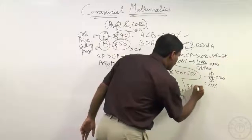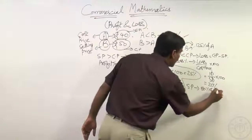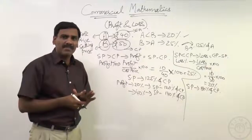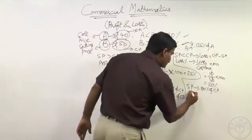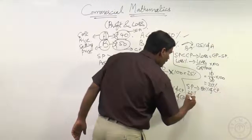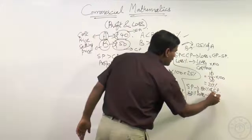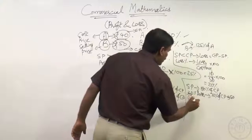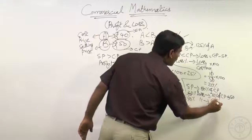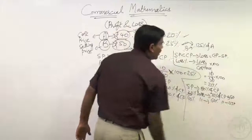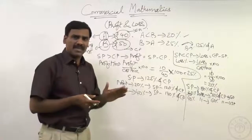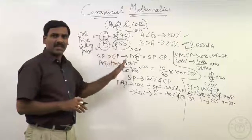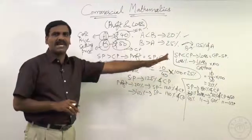So selling price is 80 percentage of cost price for a 20% loss. If it is 10 percentage less, it becomes 90 percentage. 30 percentage loss means it becomes 70 percentage of CP. 40 percentage loss means 100 minus 40 — 60 percentage of CP is the SP value. 10 percentage loss means 90 percentage of CP is the selling price. In that way we can relate loss percentage with selling price and cost price.